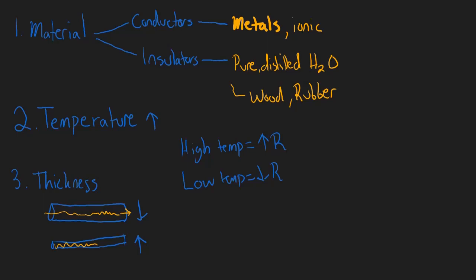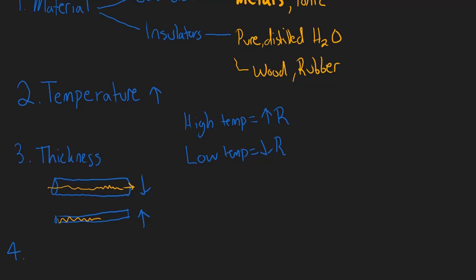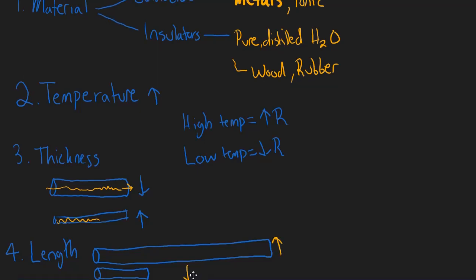Number four is the length of the wire, and this is pretty self-explanatory. A longer wire, all other things being equal, is going to have a lot more resistance than a shorter wire. If you're setting up a server, you don't want your wires to be too long because that just increases resistance for no good reason. When they set up the electrical grid, a decent amount of energy is lost to resistance because the wires are spanning very long distances. So a longer wire has higher resistance and a shorter wire has lower resistance.